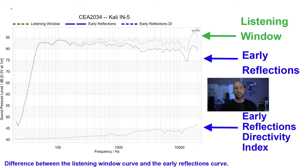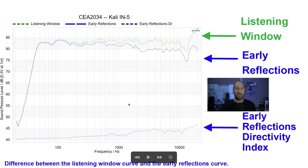With that in mind, let's talk about the two different directivity indices. The first is the early reflections directivity index — it's the difference between the listening window curve and the early reflections curve. We already discussed both of those curves, and the DI values are always shown at the bottom of the graphic, so that's always where to look for directivity.